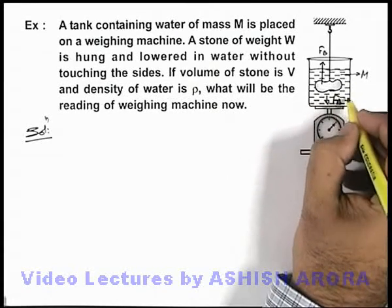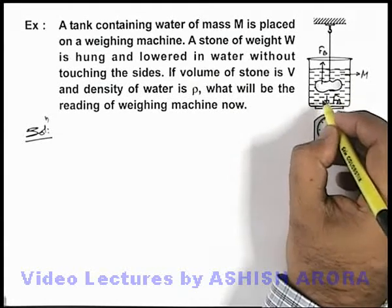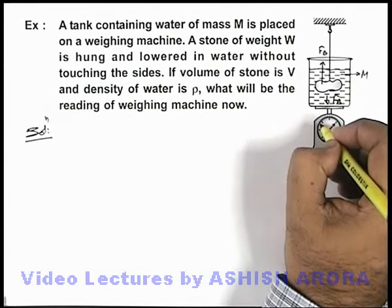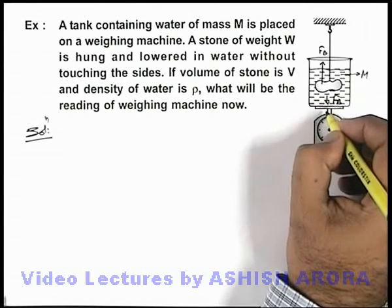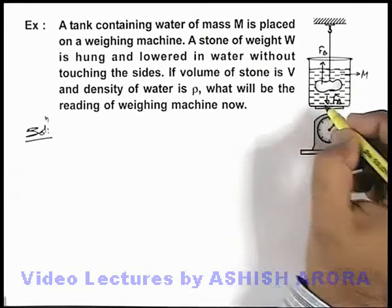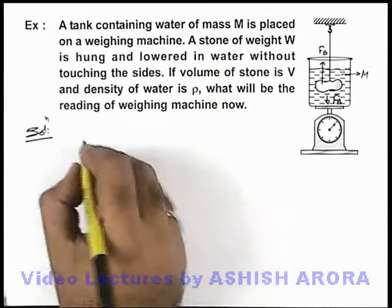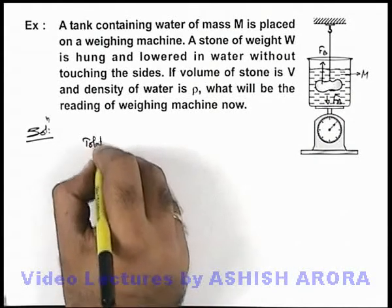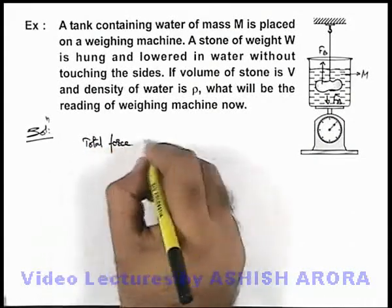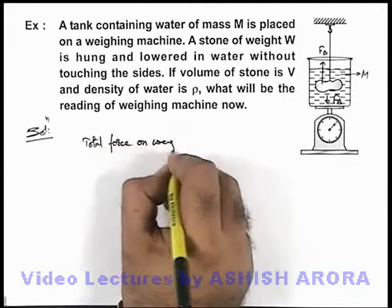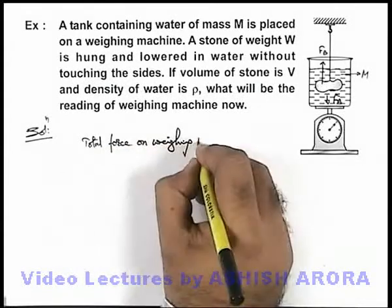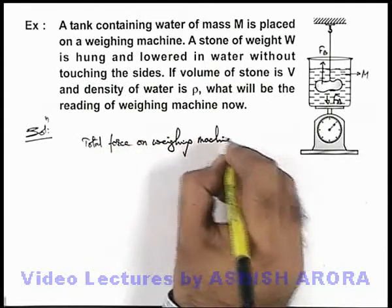So the total force acting on the water will be one is Mg in downward direction, and other is the buoyant force acting on it in downward direction. So we can simply state the total force on weighing machine.